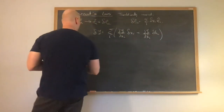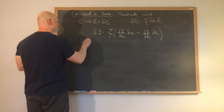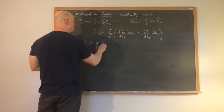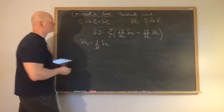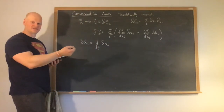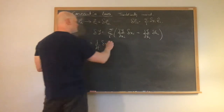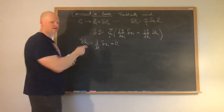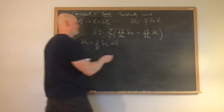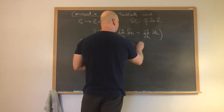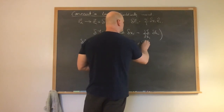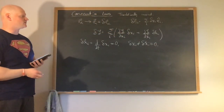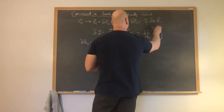Let's look at the variation of the velocity. The variation of the velocity is equal to the time derivative of the variation in position. But in this case, since the system is translationally invariant, this must be equal to zero—because the position delta is not an explicit function of time. So the variation of the velocity must be equal to zero, meaning that whole term has to be zero.